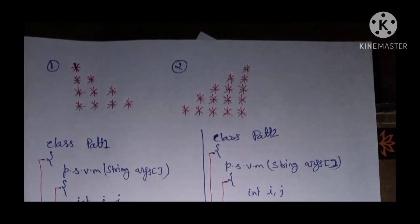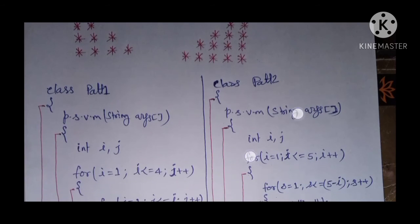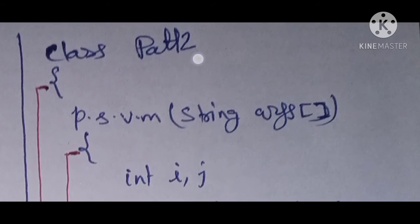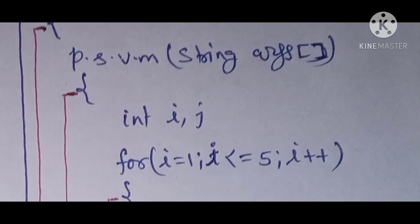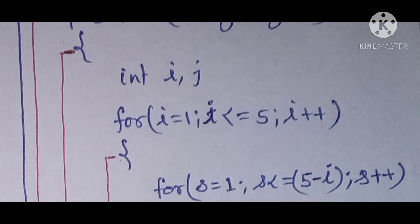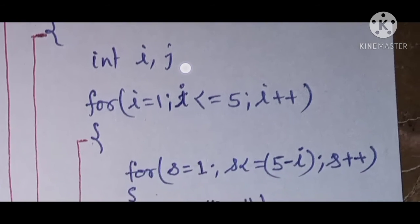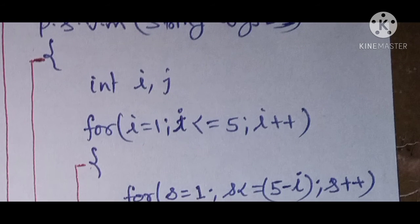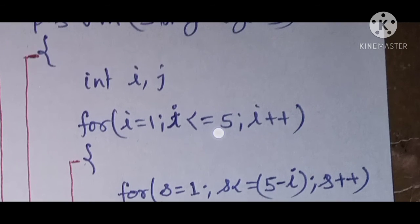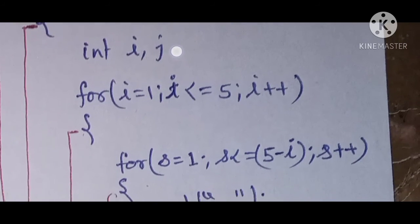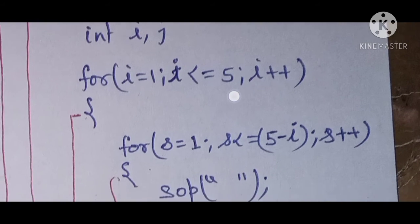The same logic is used for pattern 2 with one difference: space printing. The class name is `pat2` with `psvm`. I have taken variables `i`, `j`, and one more variable `s` — make sure to declare and terminate `s` with a semicolon, as I use `s` for the space loop.